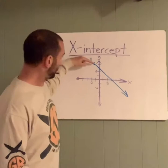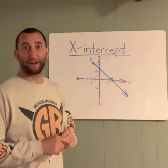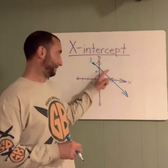Now, how do you write the ordered pair for that? That's all you need to know how to do. This happens at the point 3. We don't go up or down any, so it's 0. X-intercept: (3, 0). Magic.